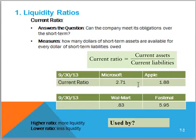Microsoft, for example, has a current ratio of 2.71. This means that for every dollar in current liabilities, Microsoft has $2.71 in current assets to pay those bills. Apple, on the other hand, has a ratio of 1.88. So we would say Microsoft is more liquid than Apple.